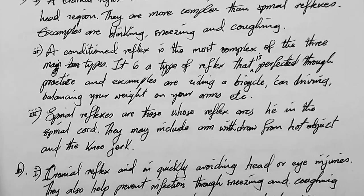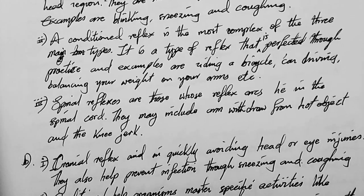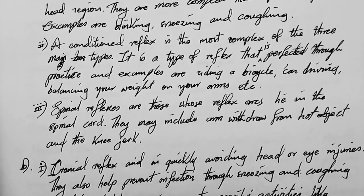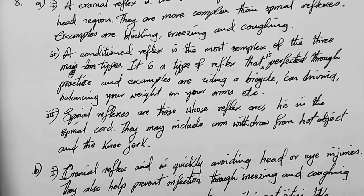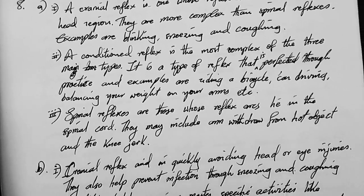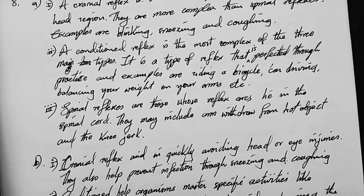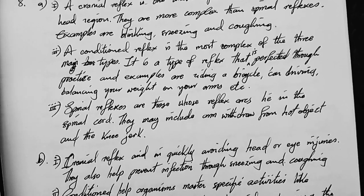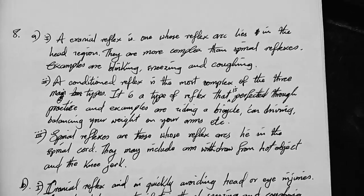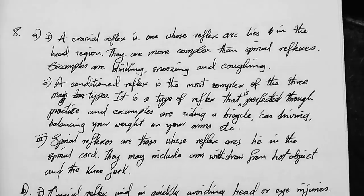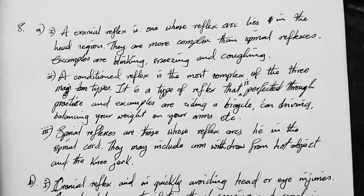Spinal reflexes are those whose reflex arcs lie in the spinal cord. They may include arm withdrawal from a hot object and the knee jerk. When you hammer at a certain position on the knee while relaxed and seated with legs not on the ground, the leg will actually kick back. These are examples of the three reflexes.